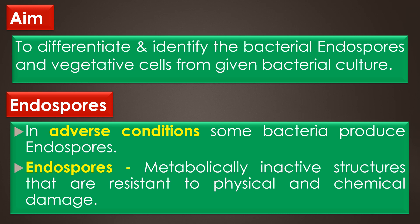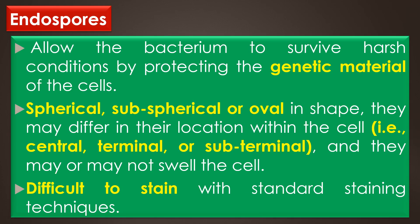Endospores: in adverse conditions like nutrient limitation, extreme temperatures, or dehydration, some bacteria like Clostridium species and Bacillus species produce endospores. Endospores are metabolically inactive structures that are resistant to physical and chemical damage. The endospores allow the bacterium to survive harsh conditions by protecting the genetic material of the cells. Once conditions are favorable for growth, spores germinate and bacteria growth continues.